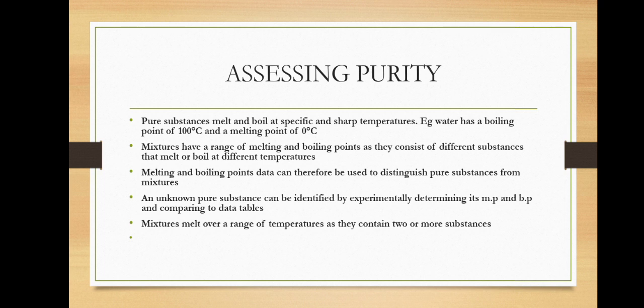For the boiling point of a liquid, if the impurity is a dissolved solid: a pure substance boils sharply at one temperature, whereas an impure substance boils over a range of temperatures and at a higher temperature than the pure liquid. If the impurity is another liquid, a pure substance still boils sharply at one temperature, but the impure substance boils over a temperature range — starting at the boiling point of one liquid and rising to the boiling point of the other.